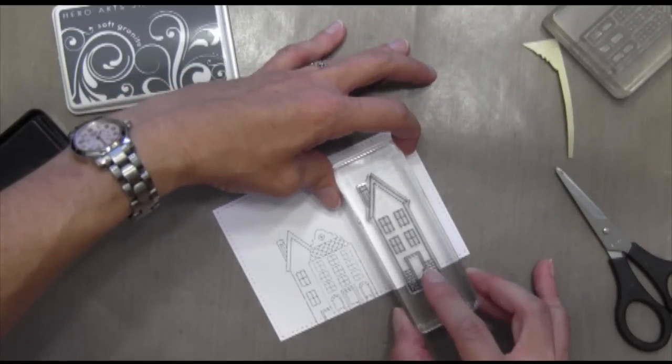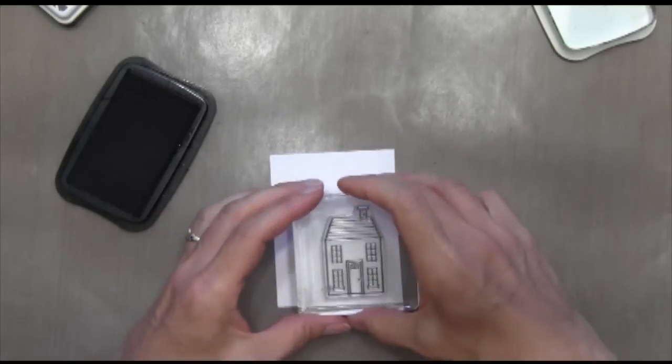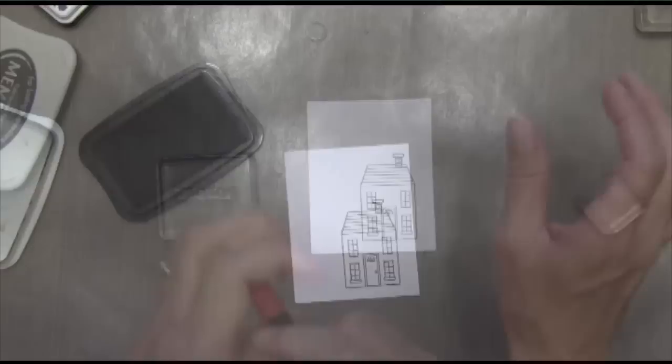I'm going to pop this one up a little higher so it looks like I have three different homes, but it's actually two. I'm going to stick this one in the middle and stamp it in Memento Tuxedo Black.